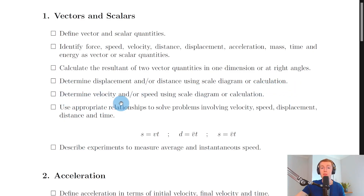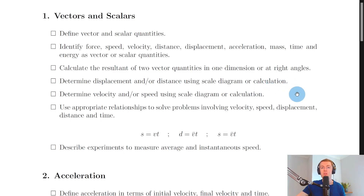You need to determine displacement and/or distance using a scale diagram or the calculation method, and similarly determine velocity and/or speed using a scale diagram or the calculation method. For the scale diagram, ensure your diagram is as big as possible and use a ruler to measure the length of the resultant vector and a protractor to measure the angle. For the calculation method, add vectors nose to tail to form a right angle triangle, find the hypotenuse using Pythagoras — c² = a² + b² — and find the angle using tan θ = opposite over adjacent. Remember you need to define the direction using compass points or bearings.